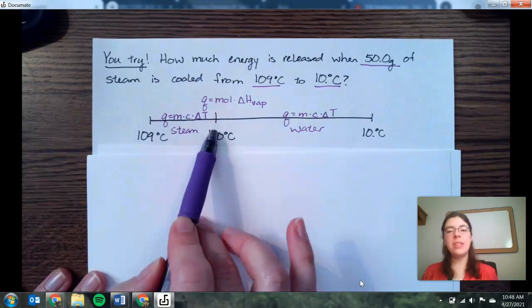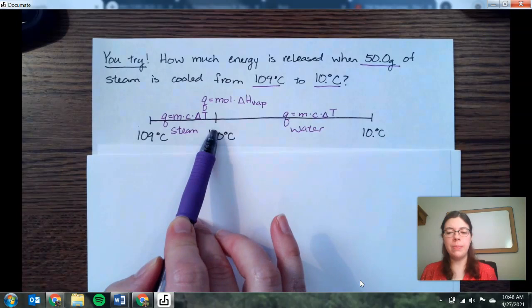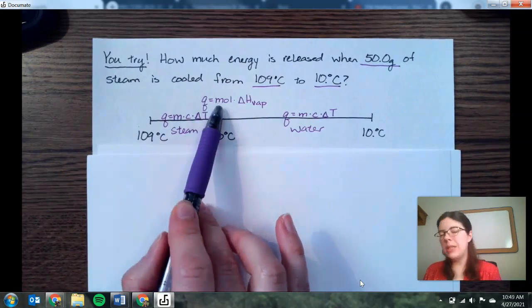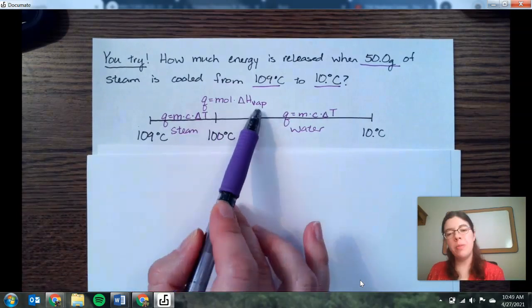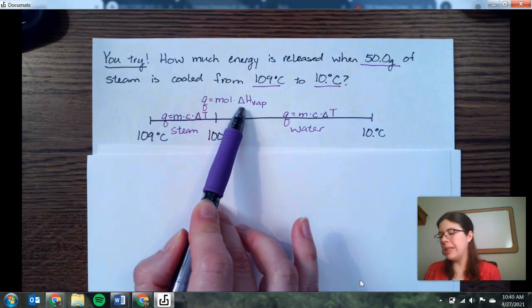At the phase change, the temperature isn't occurring because all of the energy is going into changing those intermolecular forces and the distance between those molecules. So we're going to use Q equals moles times delta H, in this case delta H of vaporization, because we have that boiling and condensing phase change at 100 degrees Celsius.